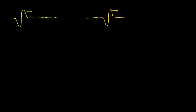In the last video, we said this disturbance that's propagating down the string, or propagating down this medium — although it doesn't necessarily have to have a medium — we call this a wave. And in particular, this wave right here is a pulse. This is a pulse wave, because we only have essentially one perturbation of the string.